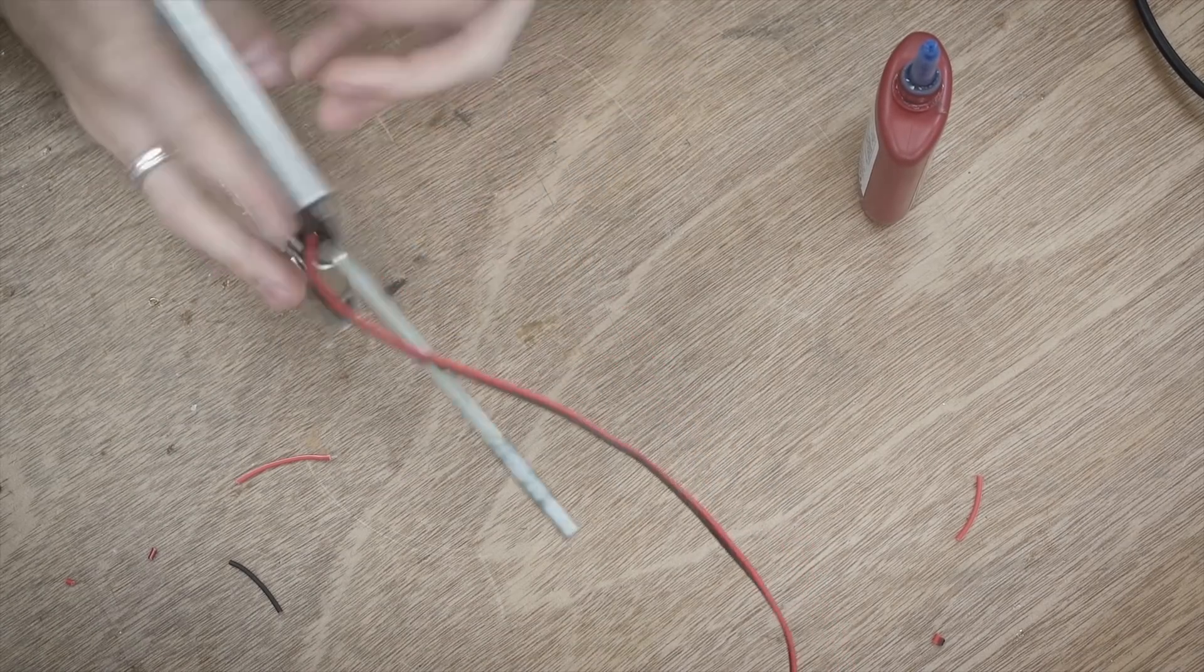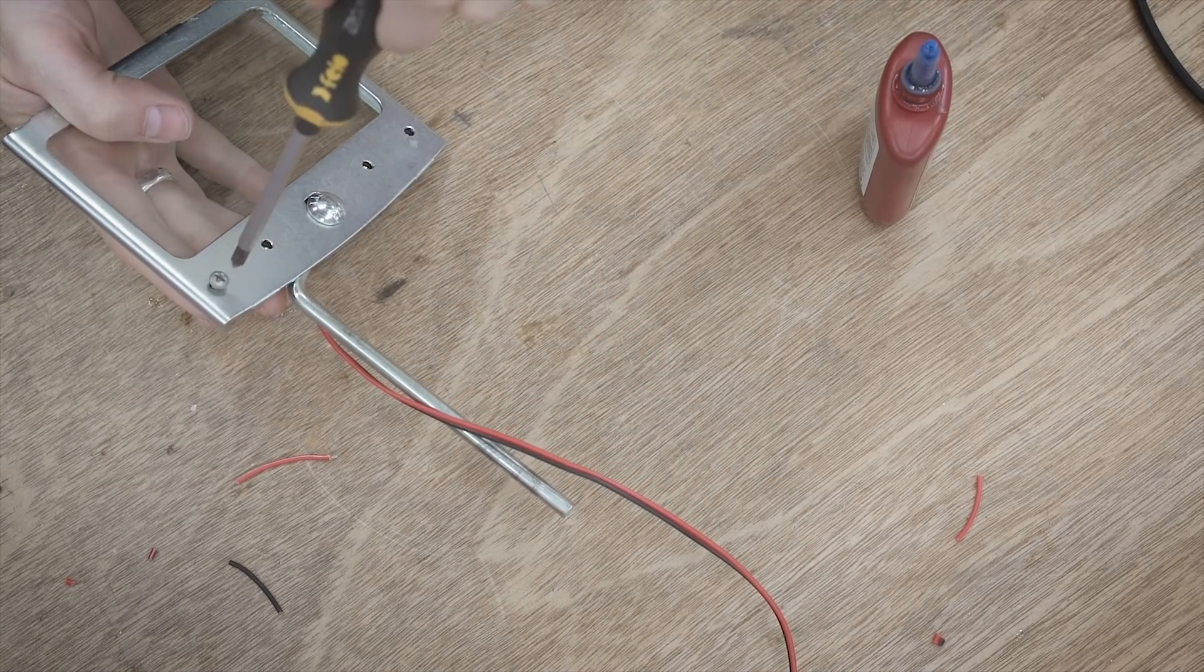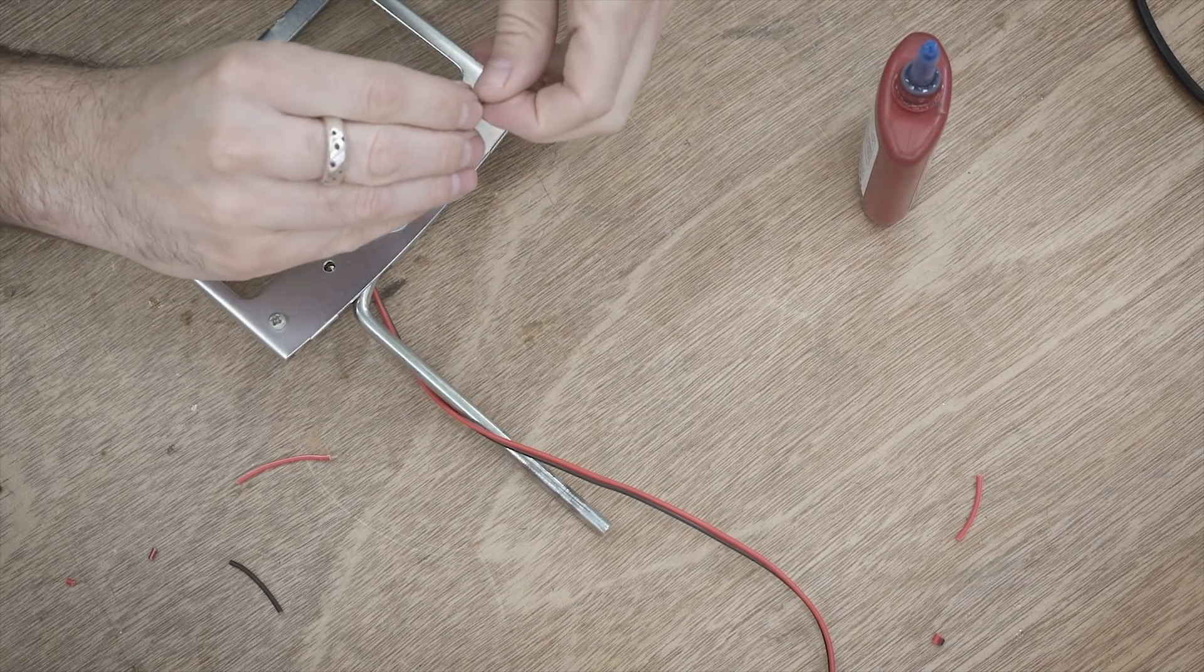Once that was in place, I just delicately soldered everything together, making sure the wires were routed around in the right place. Once those were in place, I just took the little 3D printed pieces, set them over top, and then screwed them to the frame. Nice and simple.